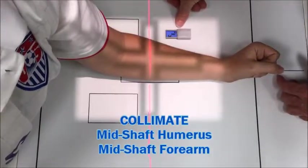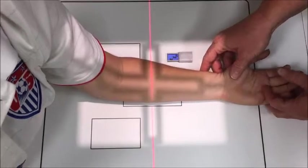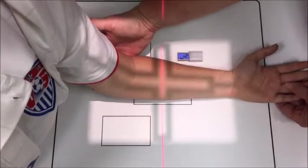Collimate, put your marker on the lateral side, and your palm up, and that's the first AP view.